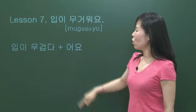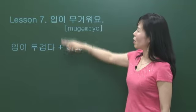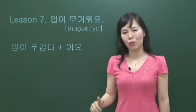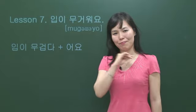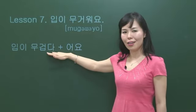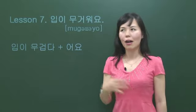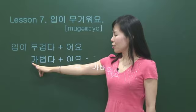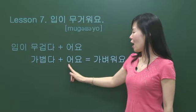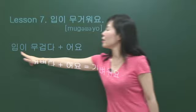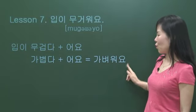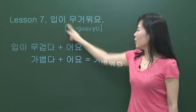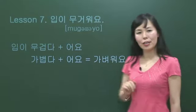입이 무겁다 is the basic form. Add 어요 and it becomes 입이 무거워요. What about the opposite expression — someone who is very talkative? 무겁다 means heavy, and the opposite, light, in Korean is 가볍다. So 입이 가벼워요 is the opposite of 입이 무거워요. 입이 가벼워요.